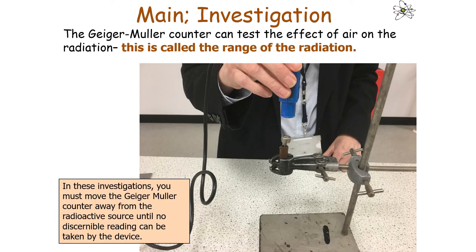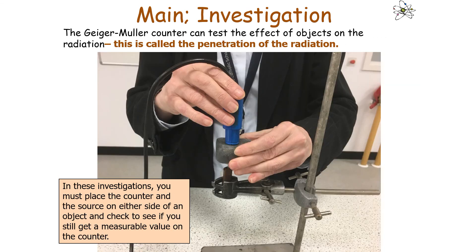The longer a reading is taken for, the lower the percentage uncertainty of the background reading, as radioactive decay is a random event and must be treated differently when calculating percentage uncertainty. To test the range of radiation in air, you move the Geiger-Müller counter away from the radioactive source until no discernible reading different from the background can be taken. To test the penetration of radiation, you place the counter on one side and the source on the other side of an object and see if you get a measurable count different from the background. For example, if you place paper between the counter and the source and the particle is still detected, you can determine it is not alpha radiation.